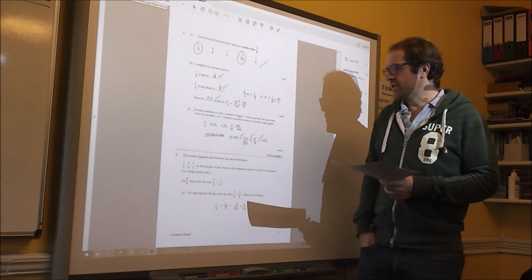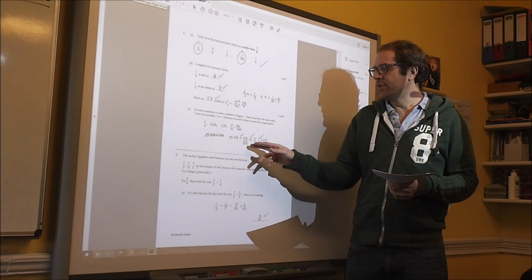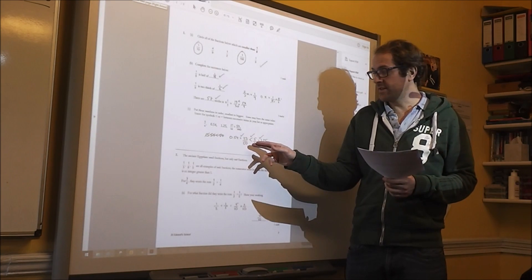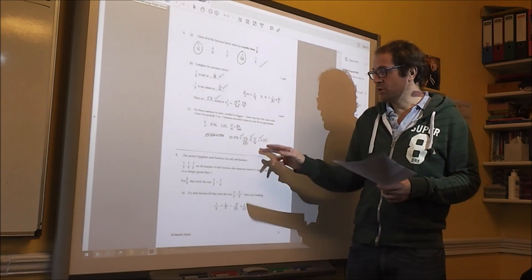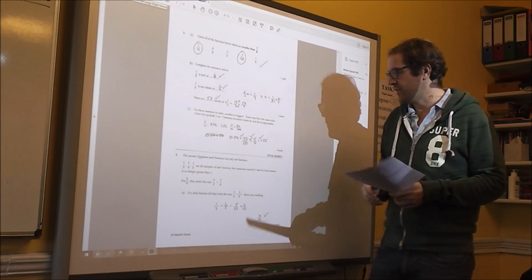Then the last bit, put them in order of size. Well that actually pairs, 0.454 is same as 27 fiftieths and that's smaller than 5 quarters which is the same as 1.25.